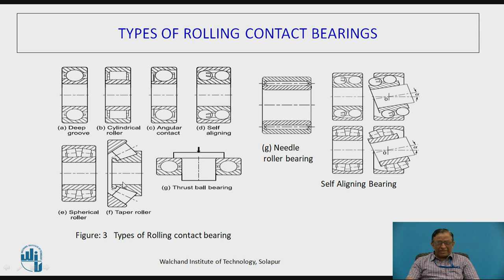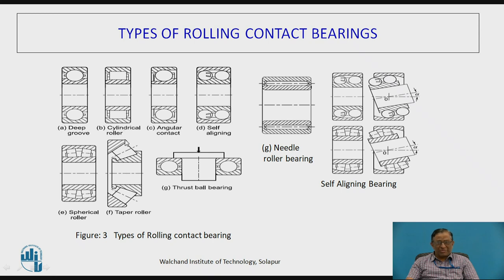This is a taper roller bearing in which the rollers are arranged along a conical axis. Because they are arranged along the conical axis, they are subjected to radial and thrust load and can sustain very high combined radial and thrust loads. So they are used in machine tool spindles wherever cutting forces come in all three XYZ axes — these are the best suitable bearings. They give even more rigidity to the system, and that is why taper roller bearings are widely used.